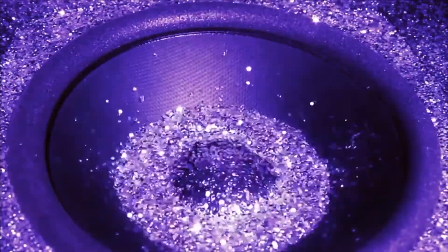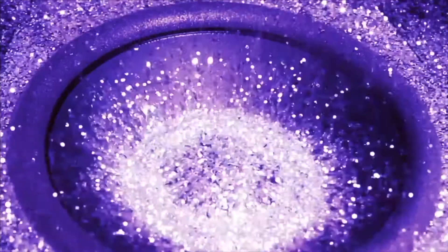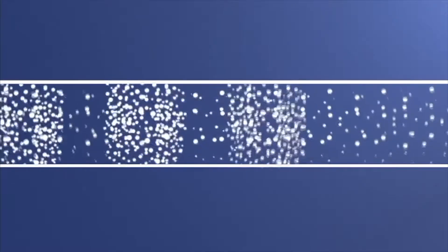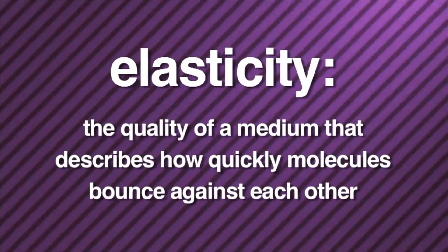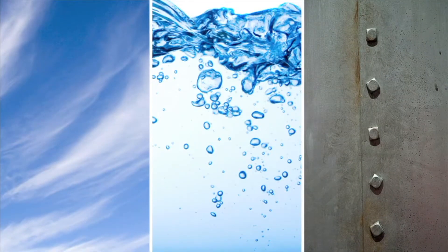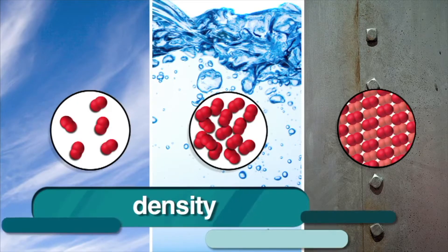Why is that? Well, sound is energy, and when sound travels, it's the transfer of energy. The initial energy created from the sound is bounced from molecule to molecule and vibrates outward from the sound's source. If we watch a demonstration of sound traveling through air, we notice that it takes a while for the molecules to bounce against each other and transfer the energy through the medium. The quality of a medium that describes how quickly molecules bounce against each other is known as elasticity. Now, if we look at another graphic demonstration where molecules are packed together really closely, you can see that the molecules bounce off each other much faster, causing the energy to move more quickly. That's why sound travels faster in steel than in air or water. Solids are denser than liquids or gases. Density is just a way to describe how closely molecules are packed inside a medium.